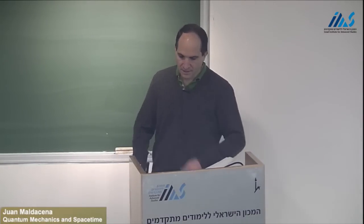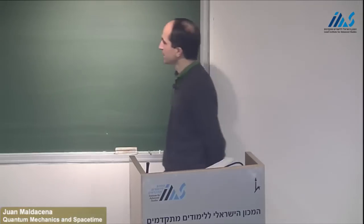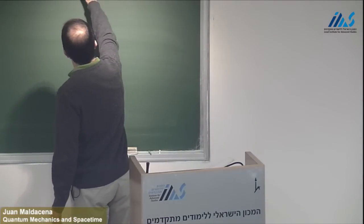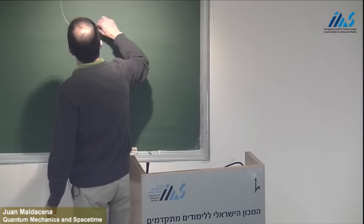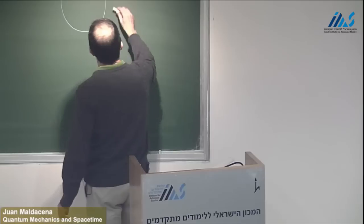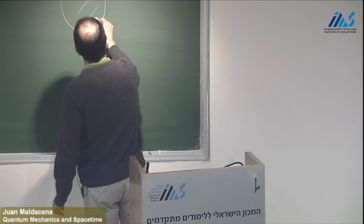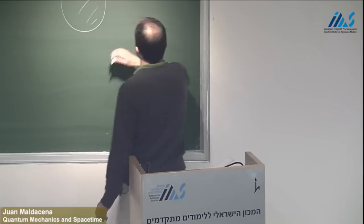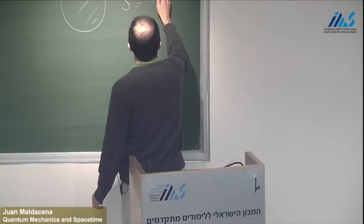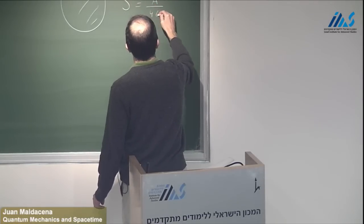So what is the Bekenstein bound? We know that black holes have some entropy. If we have a black hole with some horizon, it has an entropy which is the area of the horizon over 4G Newton.